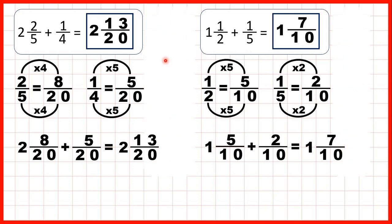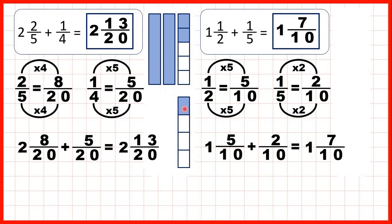So let's show fraction bars to see what we did here. We started with 2 and 2 fifths, and we were adding 1 quarter. We changed those 2 fifths into 8 twentieths, and the 1 quarter into 5 twentieths. So now that our fraction bars are split up into the same number of parts, into 20 parts or twentieths, we can put them together and that gives us 2 wholes and 13 twentieths as our answer.